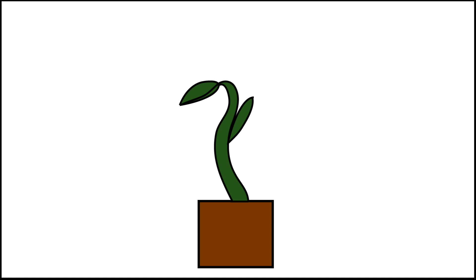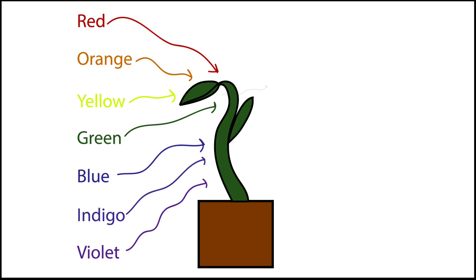For example, let's look at this plant. Why is it green? As sunlight hits the plant, green light is reflected, and the other colors are absorbed, which is why the plant looks green.